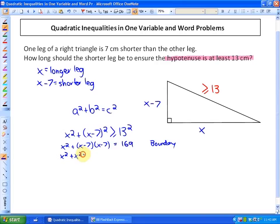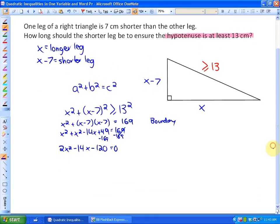It would be x squared plus x squared minus 14x plus 49 is equal to 169. If I put this into standard form, I subtract 169, and I have 2x squared minus 14x minus 120 is equal to 0. A few ways you could solve this to find out where the boundary points exist. The easier route, if you're good at factoring, would be to factor. Your greatest common factor is 2, so I can make it x squared minus 7x minus 60 is equal to 0.